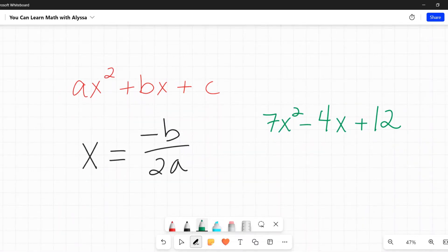So for this example of 7x squared minus 4x plus 12, I start with my quadratic formula of x equals negative b over 2a. Negative or the opposite of the b in this case, I would take my negative 4 and I would put the opposite of that, which would be a positive 4 on top.